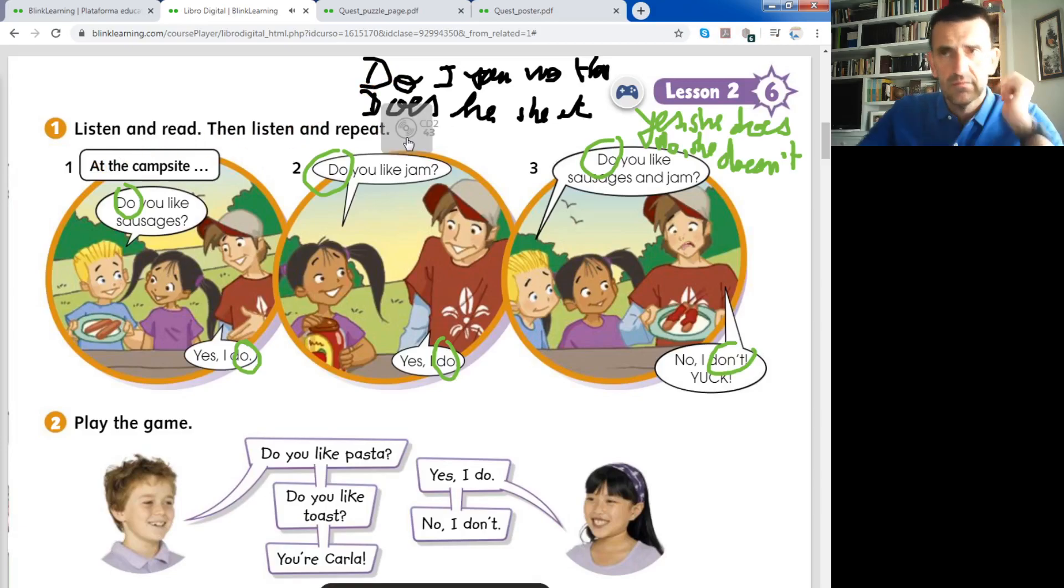Vamos a escuchar y repetimos, listening 43, activity 1, listen and read, listen and repeat. At the campsite, en el campamento. Do you like sausages? Yes, I do. Do you like jam? Yes, I do. And finally number 3, do you like sausages and jam? No, I don't. Yuck. Lo que te he dicho antes, yuck, no me gusta.